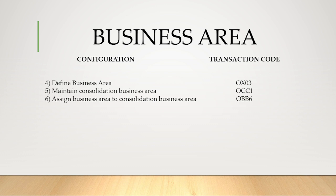In ECC, we got profit center and segment reporting. With the profit center, we can transfer both costs and revenues. The problem with business area is it is not created at company code level — it is created at client level. This is the main problem; hence there is no link between company code and business area. The same business area can appear in multiple company codes, so there is a chance to select a wrong business area while posting transactions.